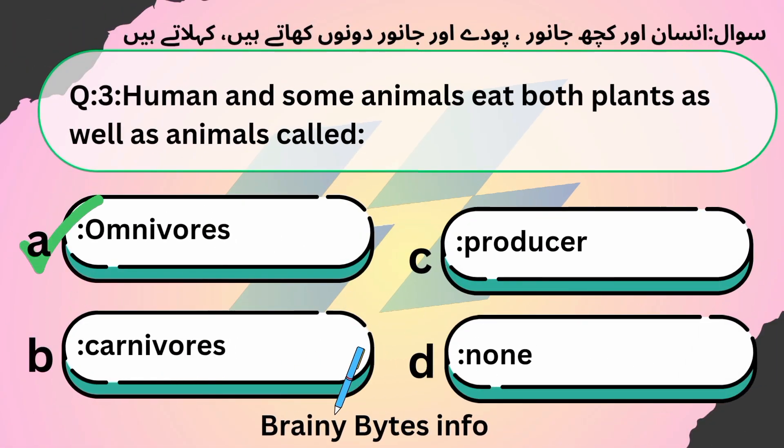Humans and some animals that eat both plants as well as animals are called — option A — omnivores.